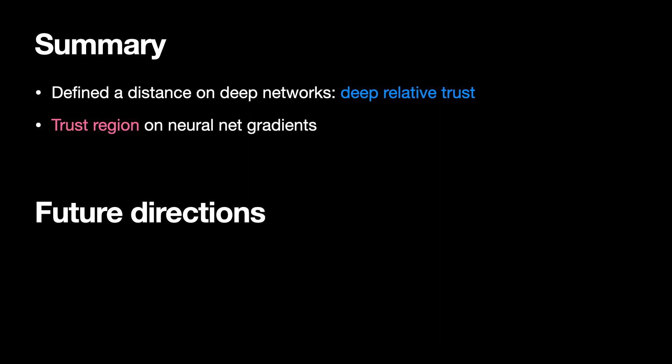In summary, we defined a notion of distance on deep networks, called deep relative trust. We showed that it gives a trust region on neural net gradients. And we showed that the fromage optimizer needs less learning rate tuning.